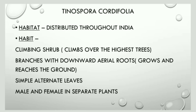Next is its habit. It is a climbing shrub and this climbs over the highest trees. The branches with downward aerial roots are seen, and these aerial roots grow and reach the ground. The leaves of Tinospora are simple and alternate. The male and female are seen in separate plants — that is, these plants are dioecious plants.